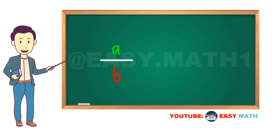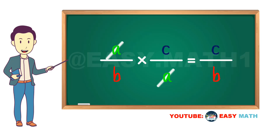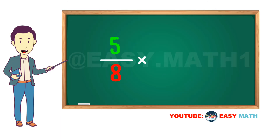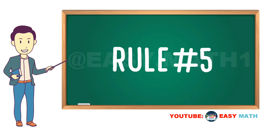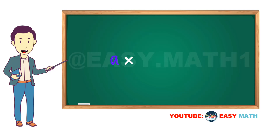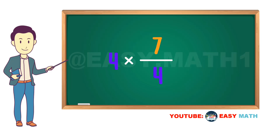Rule number four: a divided by b, multiplied by c divided by a, cancels to c divided by b. For example, five eighths multiplied by nine fifths is equal to nine eighths. Rule number five: a multiplied by b divided by a cancels to b. For instance, four multiplied by seven quarters is equal to seven.